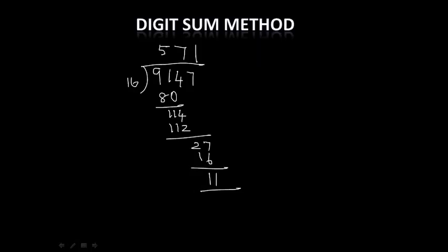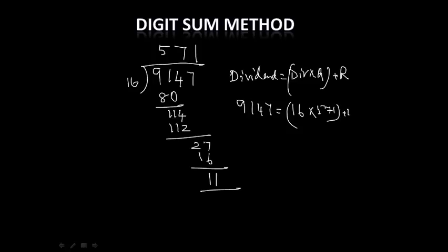So in order to verify, we normally use this method: Dividend is equal to divisor multiplied by quotient plus the remainder. So here the dividend is 9147, that is equal to the divisor 16, the quotient we derived is 571, and the remainder is 11.